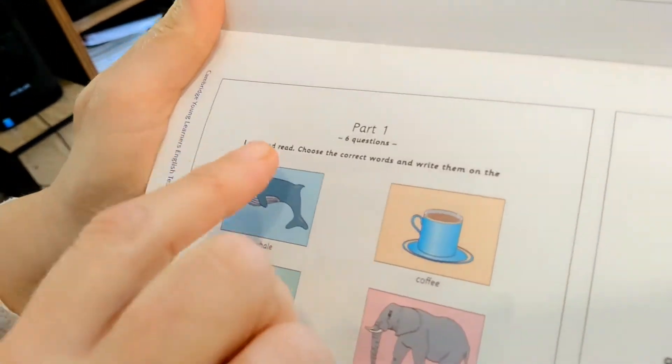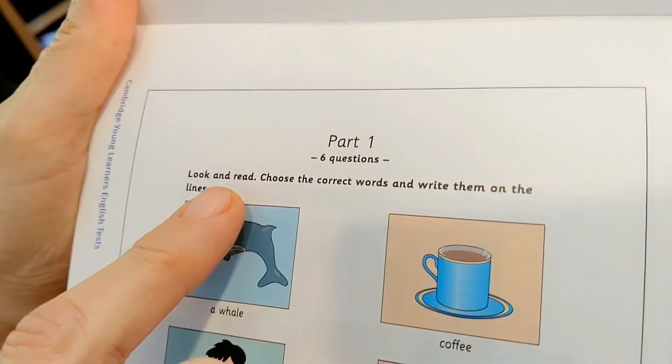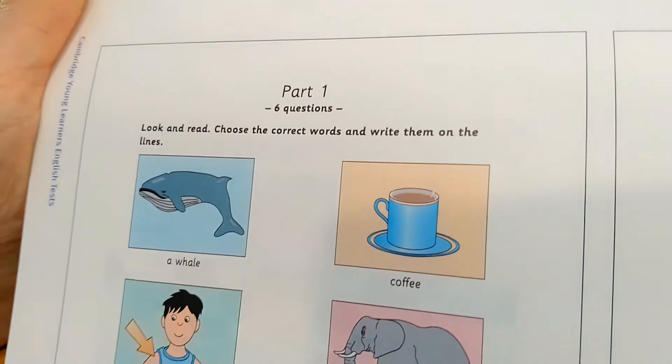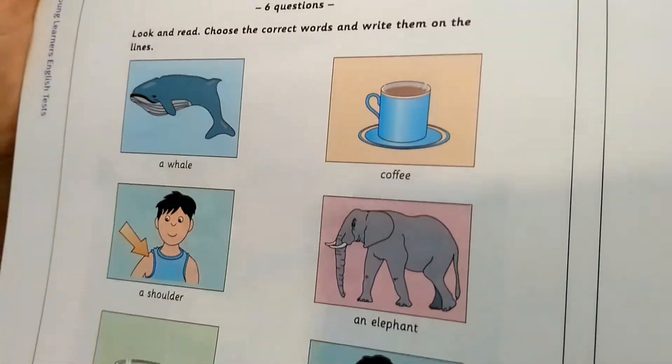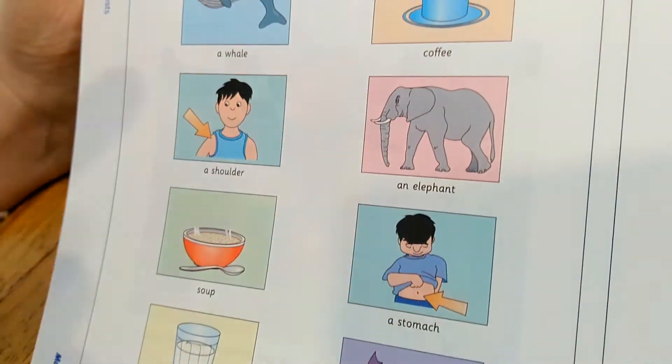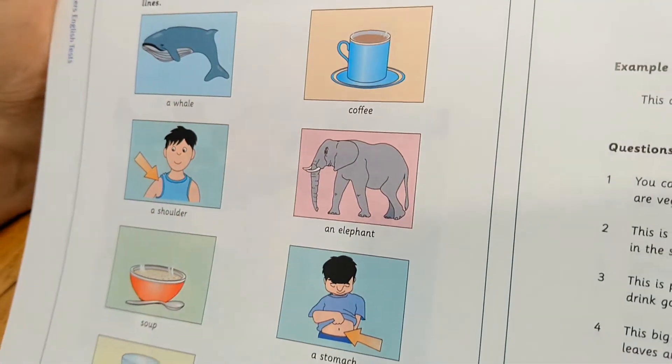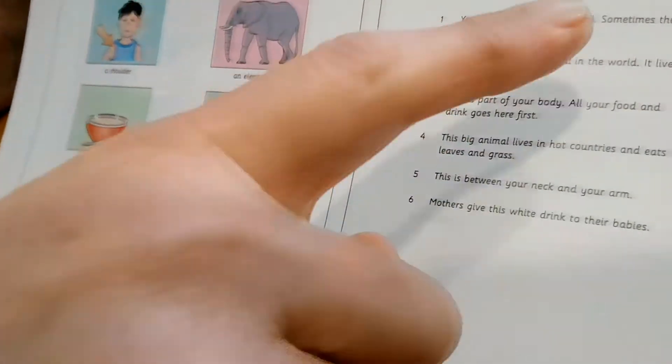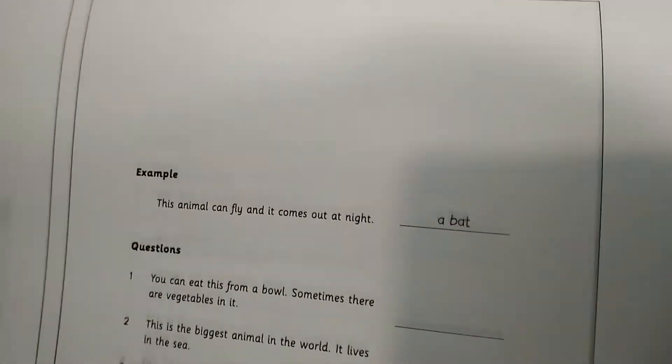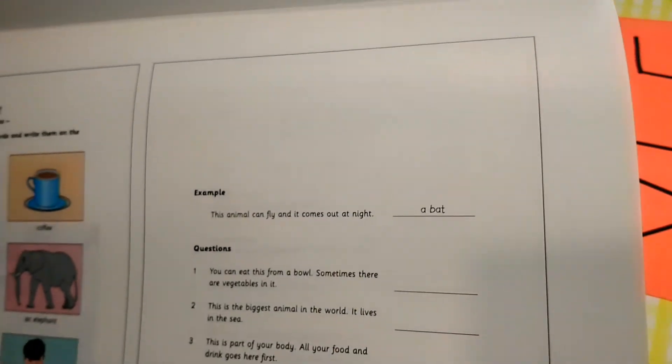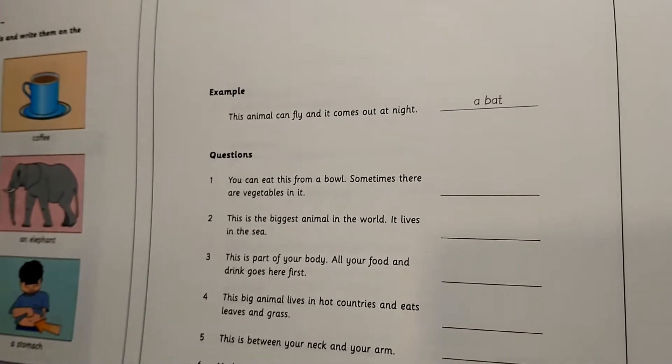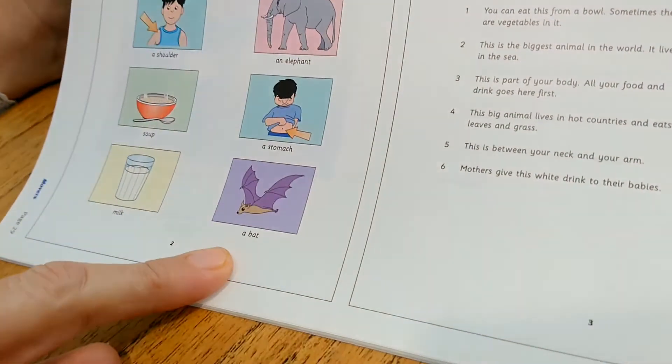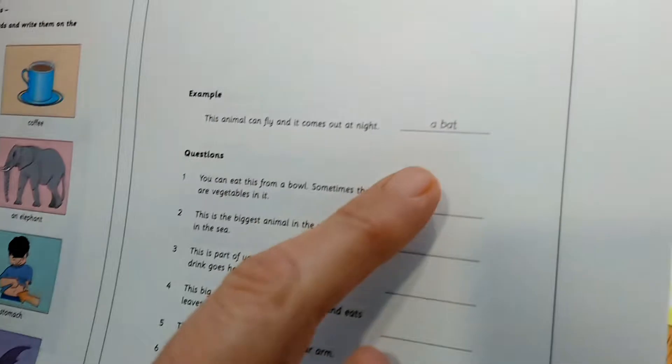Part one. Part one is look and read. Choose the correct words and write them on the lines. So you have the vocabulary with the picture to help you. For example, a whale, coffee, an elephant, shoulder. And then you have to complete with only one of the words from the picture. This animal can fly and it comes out at night. What is it? It's a bat. That's the example you have there.